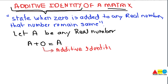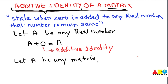This is not only the case when talking about real numbers — it is also the case when you talk about matrices. Matrices consist of multiple elements arranged in rows and columns. When we talk about the additive identity of a matrix, let A be any matrix. When we add a zero matrix of the same order to it, we must get matrix A as it is.